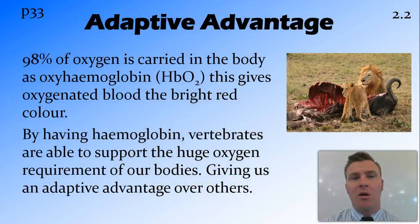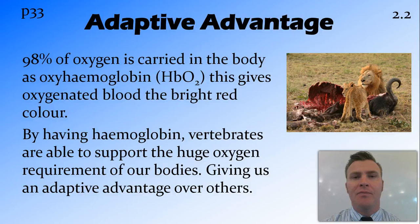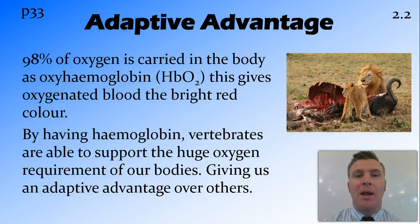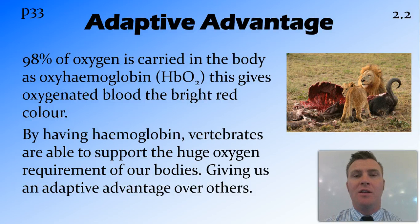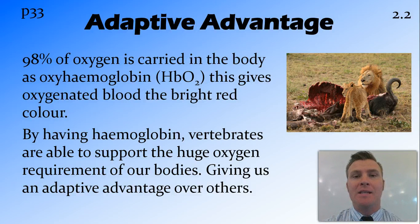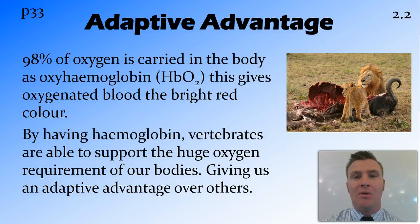The adaptive advantage that hemoglobin gives to animals is it vastly increases the amount of oxygen that can be carried in the blood. In humans, about 98% of the oxygen is carried attached to the hemoglobin in a compound called oxyhemoglobin, and the other 2% is found dissolved in the blood plasma. If the animal or human was relying on just the blood plasma, it wouldn't be able to get as much oxygen around the body, and therefore wouldn't be able to support the respiration occurring in those energy-hungry cells. By having hemoglobin, it actually increases the carrying capacity of the blood by around 70 times, giving those animals with hemoglobin — generally vertebrates — an adaptive advantage over other animals.